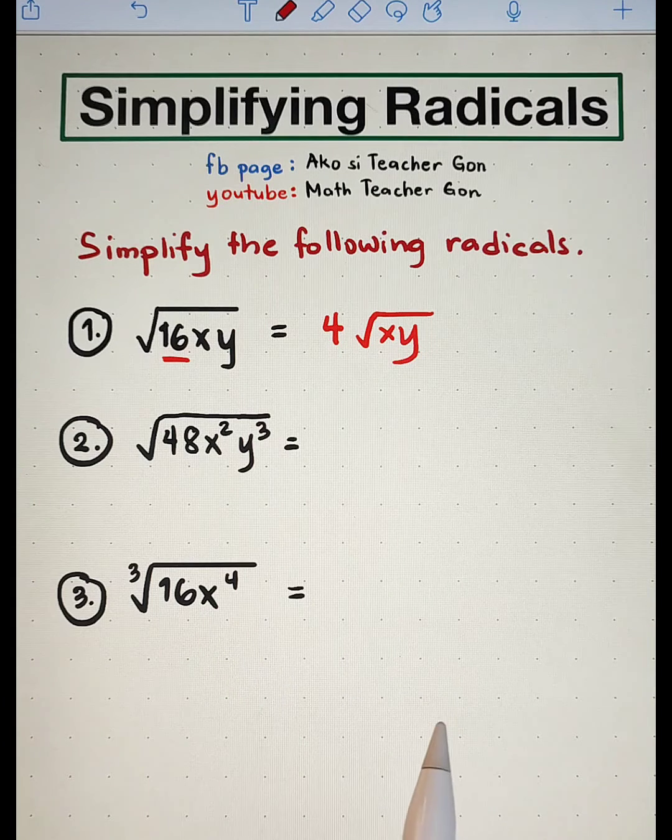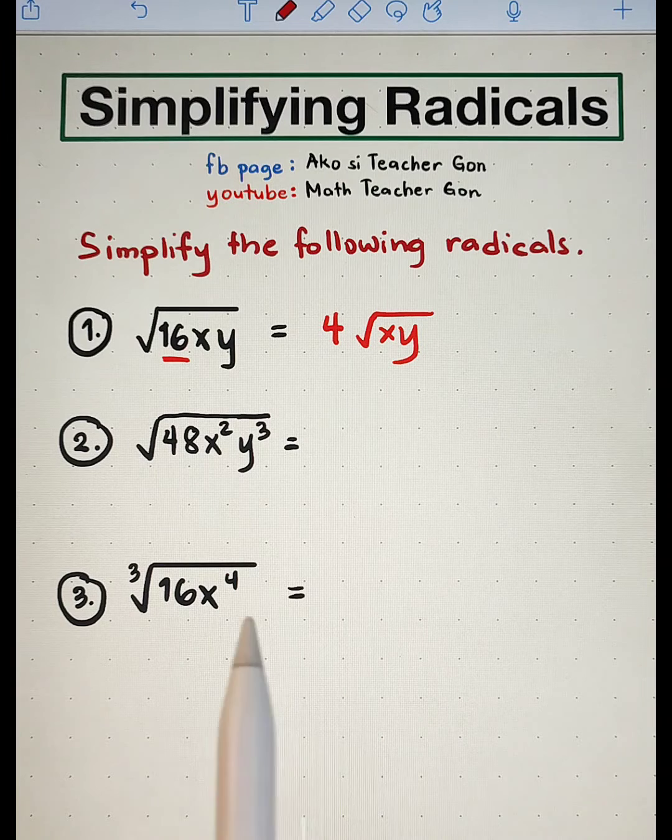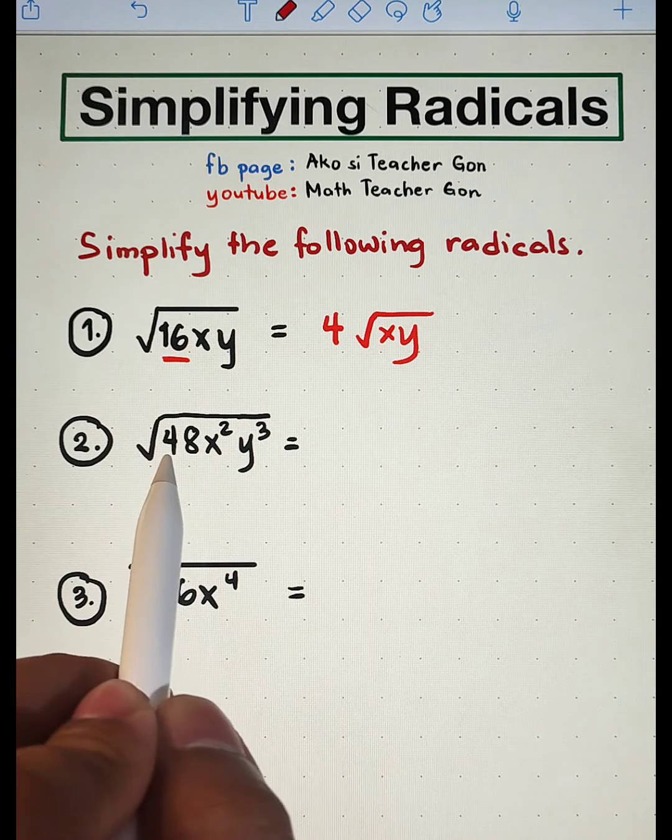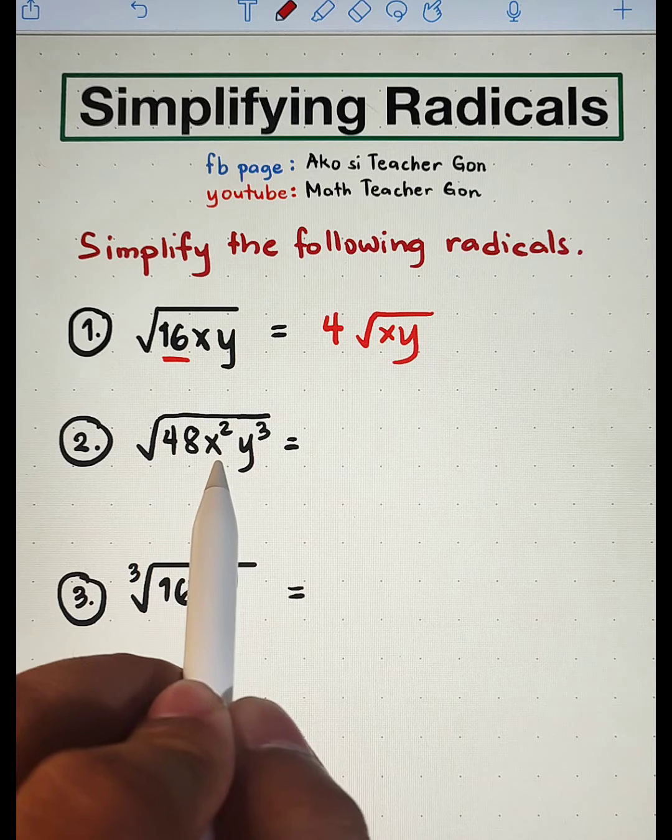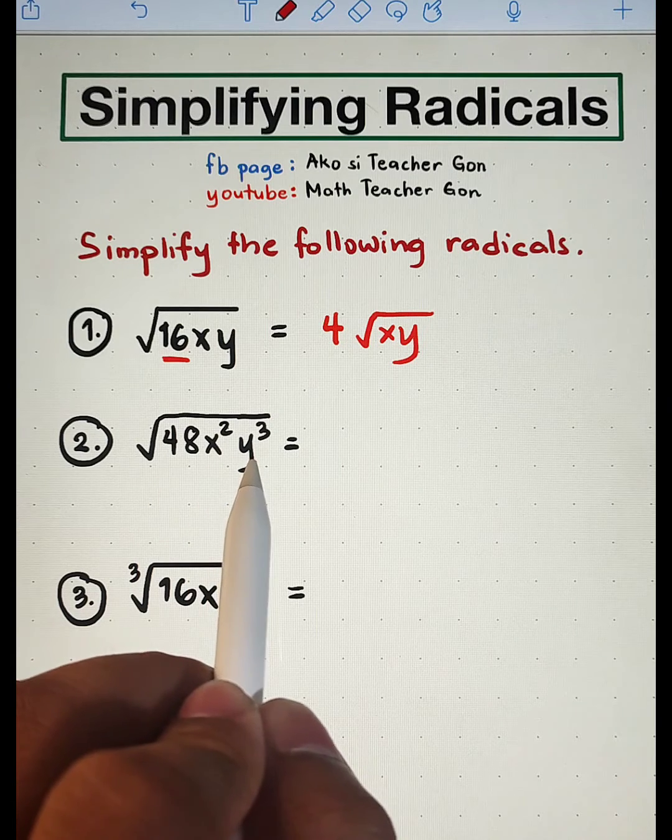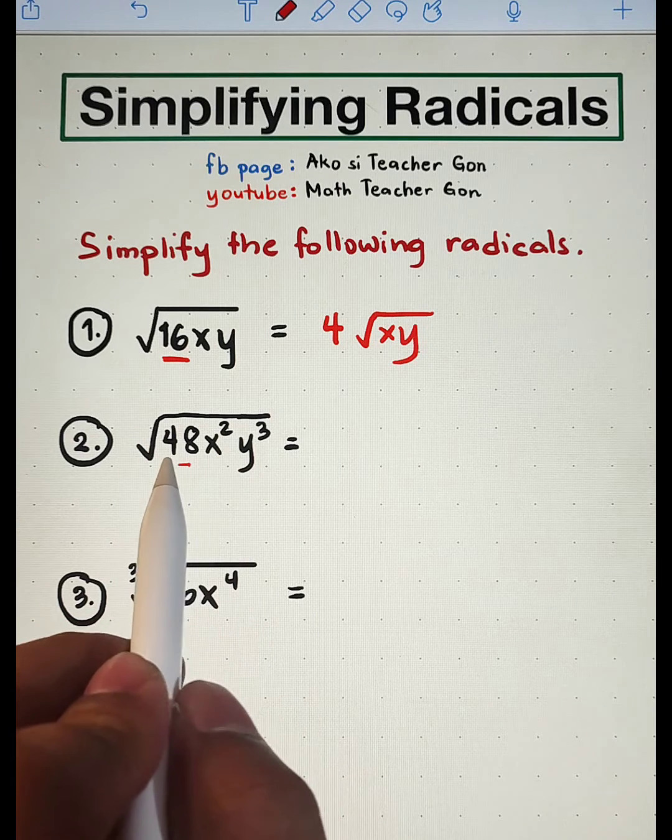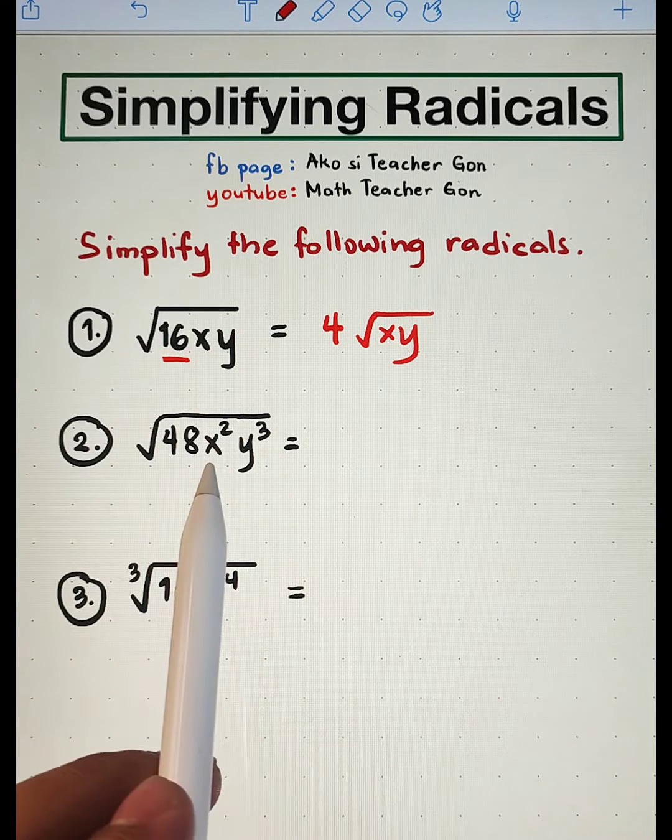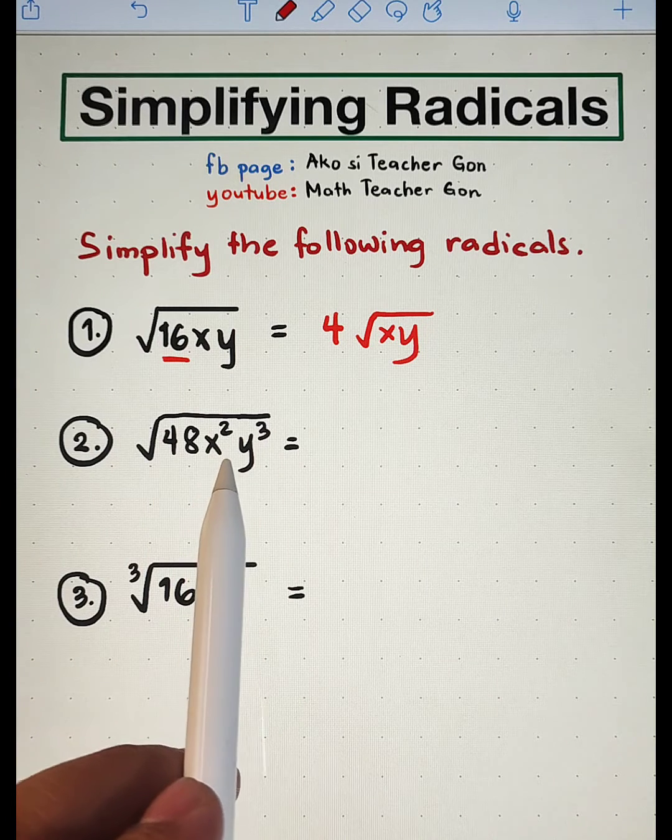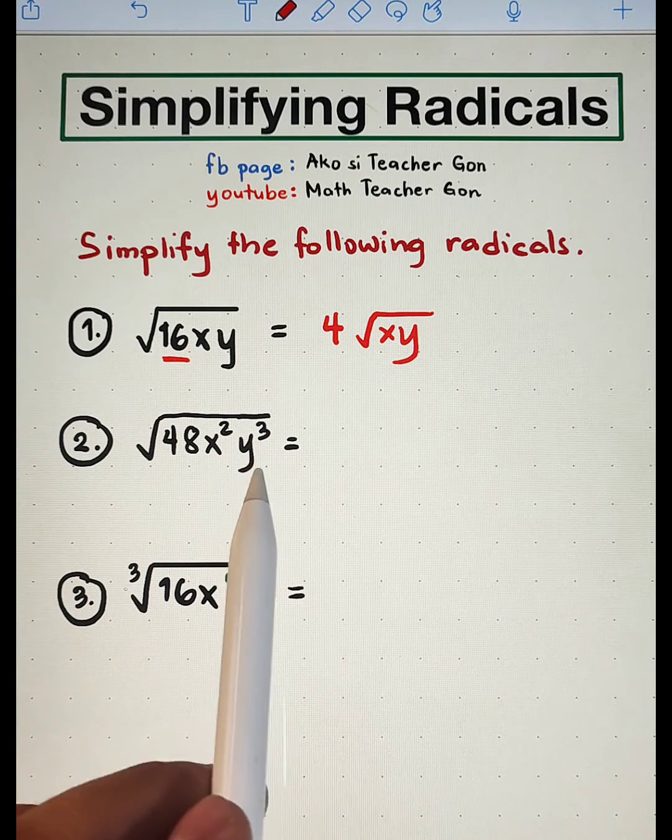Now let us move on with item number two. For number two, we are given the square root of 48 x squared y raised to 3. 48 is not a perfect square. Well, x squared is a perfect square. y cubed is not a perfect square.